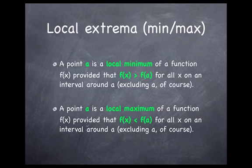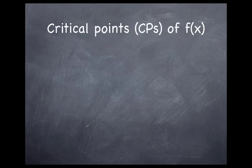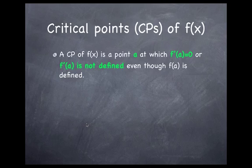A point is a local maximum if the opposite is true: the value of the function is lower than the value at a in all nearby values of x. Now we can go on to figuring out how to find these extrema. Critical points will be a tool for doing so, even though they don't always give us extrema. A critical point of f is a point x equal a at which the derivative of f is equal to zero, or it could also be a point where the derivative is not defined. But we're going to focus on the case where the derivative is defined and is equal to zero.